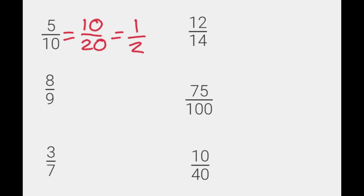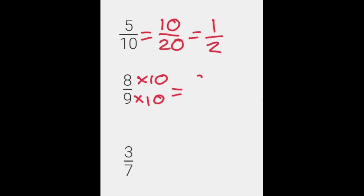So ten over twenty, or ten twentieths, is an equivalent fraction to five over ten. We're going to do eight over nine now, or eight ninths. We're going to multiply this one by ten — multiply the bottom by ten, and whatever you do the bottom you need to do the top. Eight times ten gives us eighty and nine times ten gives us ninety. So eighty over ninety is equivalent to eight ninths.